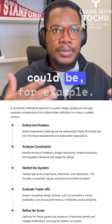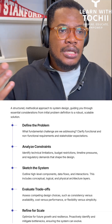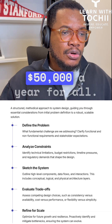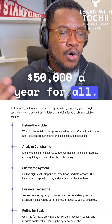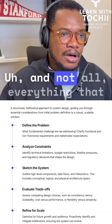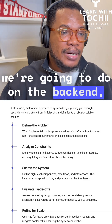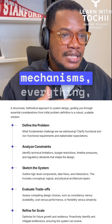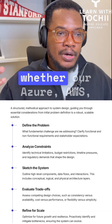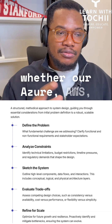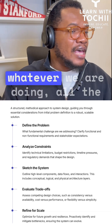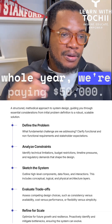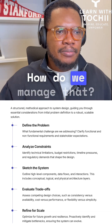Budget restrictions could be, for example, for technology we're given $50,000 a year for everything we're going to do on the backend — all our servers, all our security mechanisms, everything, whether Azure, AWS, whatever we are doing. All the subscriptions we have for the whole year, we're paying $50,000. How do we manage that?